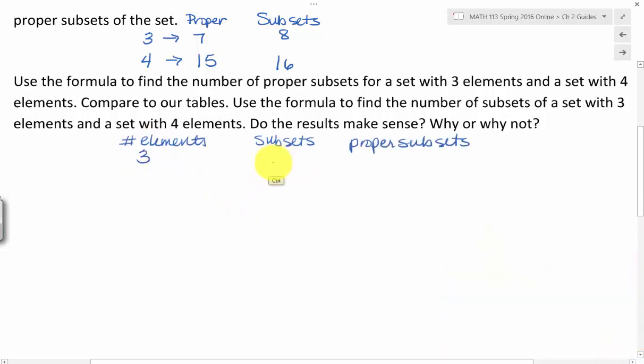So if I have three elements, then to find the number of subsets, it'll be two to the third, which means, of course, two times two times two. Two times two is four, times another two, that gives me eight. So eight subsets.